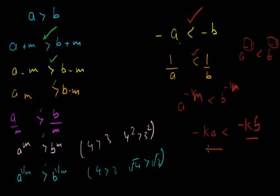The conclusion is: whenever you use a negative sign, the inequation sign changes. The rule is — whenever you work with a positive quantity, the sign will not change. Whenever you work with a negative sign, the sign will change: greater than becomes less than, and less than becomes greater than. The operation is reversed.